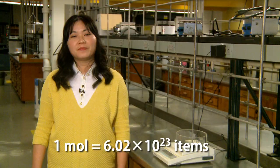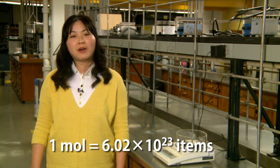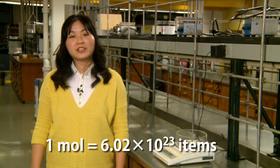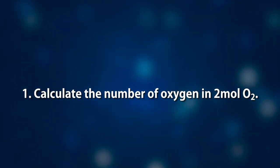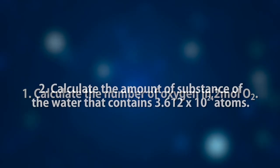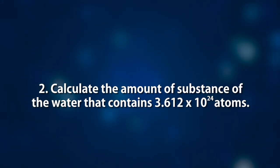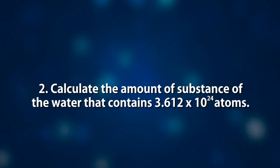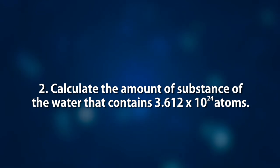Now that we have learned about a new unit — the mole — let's do some exercises to deepen our understanding. First, calculate the number of oxygen in two moles of oxygen. Second, calculate the amount of substance of water that contains 3.612 times 10 to the 24th atoms. If you understand the mole concept, these are just simple multiplication or division calculations. From these, I want you to generalize the relationship between amount of substance and number of particles. Think about it and I'll see you in a few minutes.